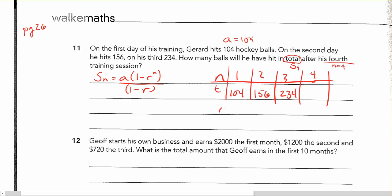But if I wanted to figure out what r is, r is going to be, again, second term on top of the first term as a fraction. And what do we get? 156 divided by 104, 1.5. So r here is equal to 1.5.